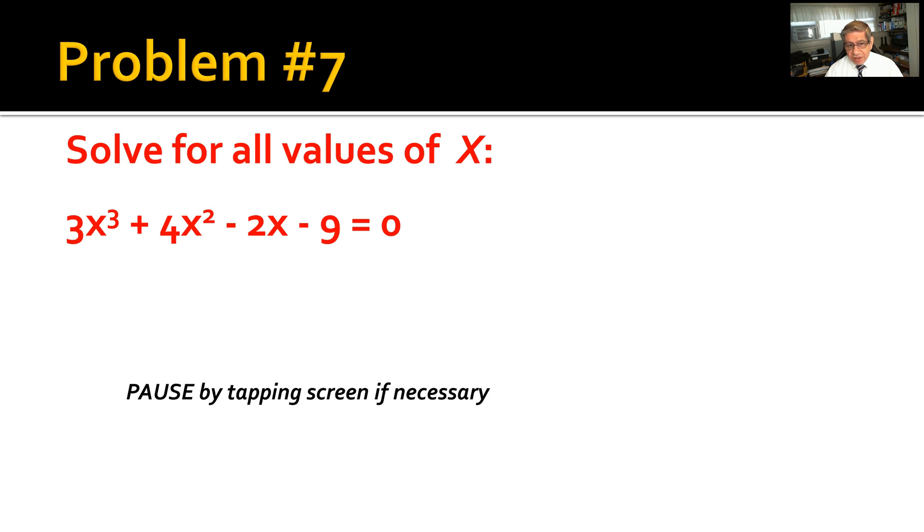Problem number six: Which governing body is responsible for all professional licensing in the United States? Problem number seven: Solve for all values of x using the equation 3x³ + 4x² - 2x - 9 all equal to zero.